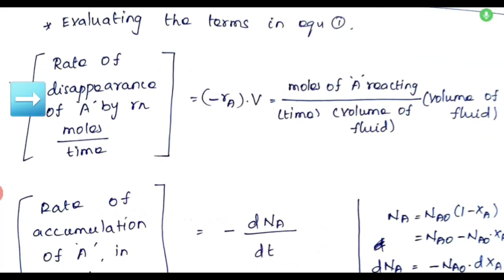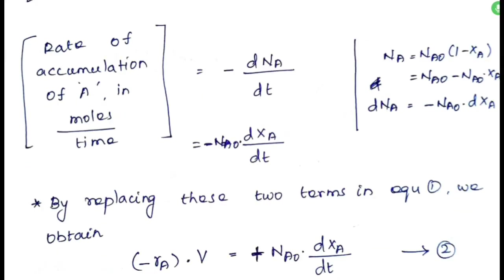Now we evaluate the two terms. The rate of disappearance of A by reaction is equal to (−rA)·V, where −rA is the rate of disappearance of A defined as moles of A reacting per unit time per unit volume of fluid. We multiply by V because we are calculating the rate of disappearance for the whole reactive fluid. The unit is moles per time.